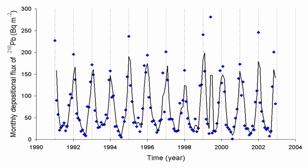In halogen fluoride solution, radon is involatile and exists as the RnF+ and Rn2+ cations. Addition of fluoride anions results in the formation of the complexes RnF3- and RnF4(2-), paralleling the chemistry of beryllium and aluminium. The standard electrode potential of the Rn2+/Rn couple has been estimated as plus 2.0 volts, though there is no evidence for the formation of stable radon ions or compounds in aqueous solution.